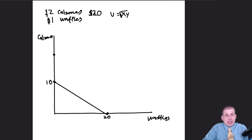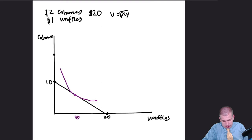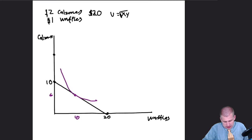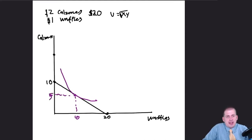For these examples, instead of figuring out the exact math, we can just draw an indifference curve and say that's the best consumption point. It doesn't actually matter for the sake of this class where that happens exactly. We'll say our optimal consumption point is about 10 waffles and 5 calzones — that's what maximizes our utility given the shape of the indifference curve.